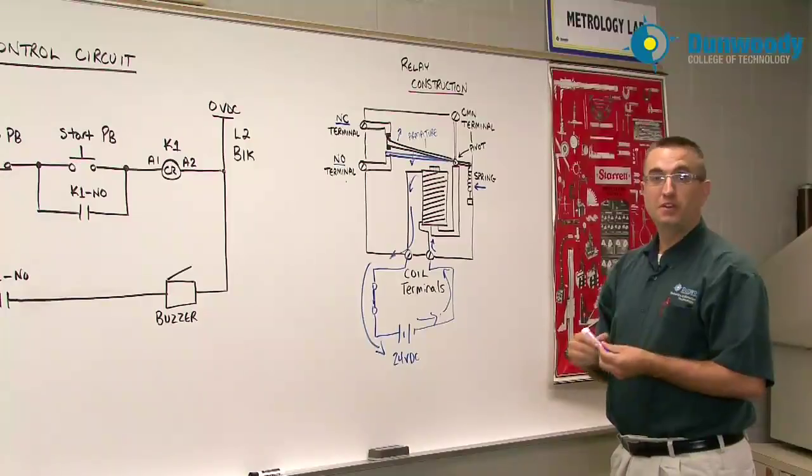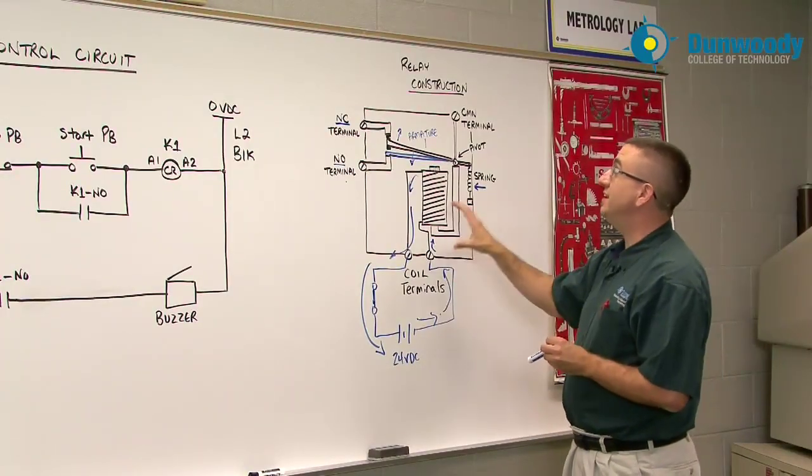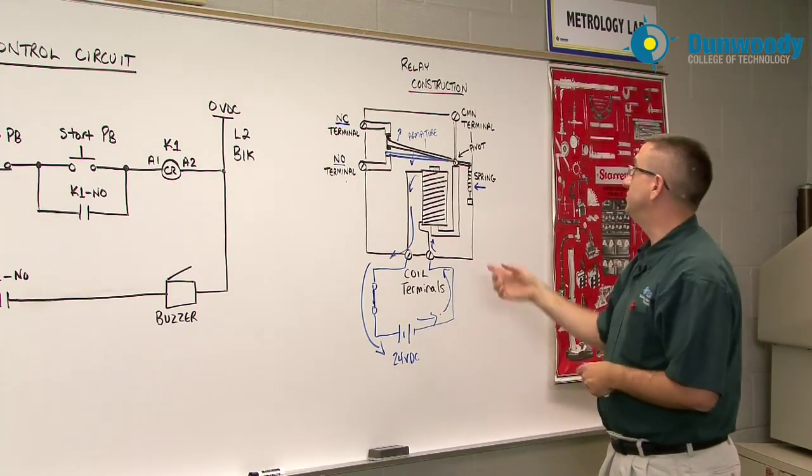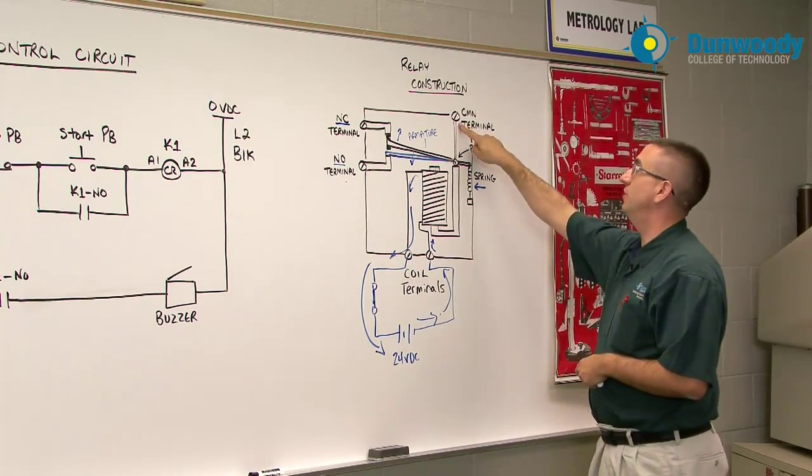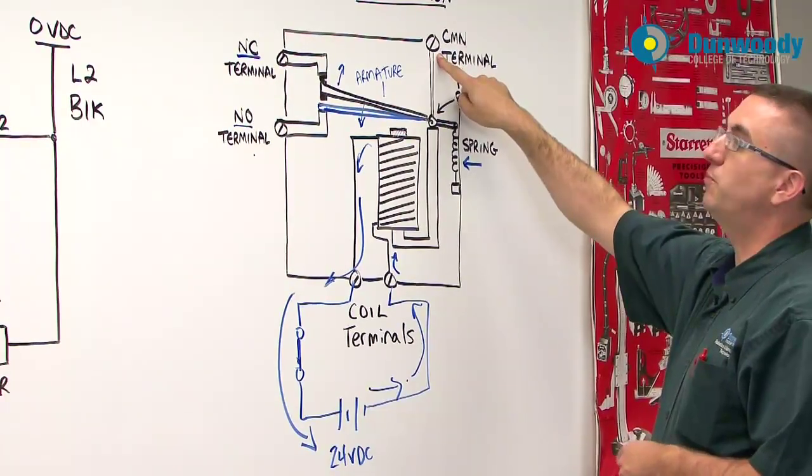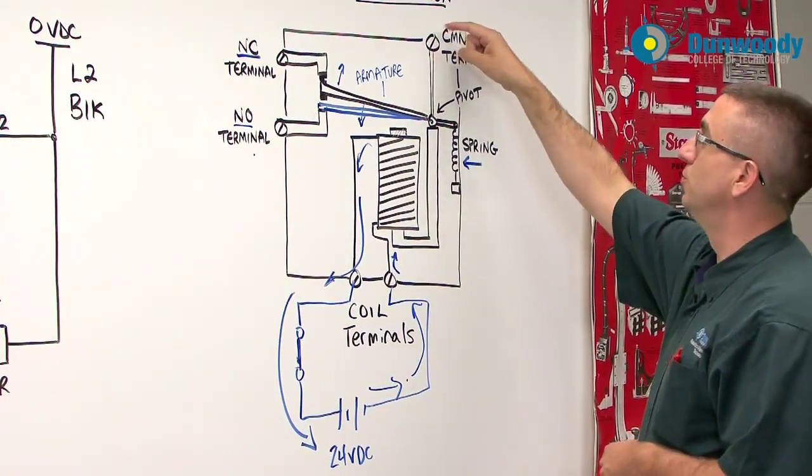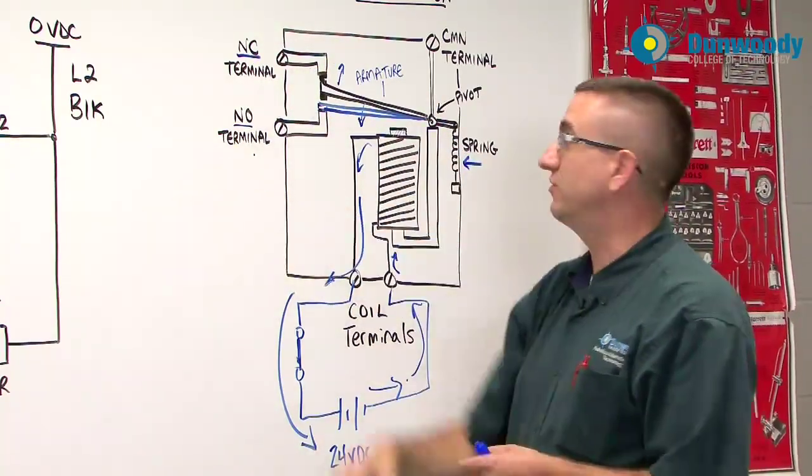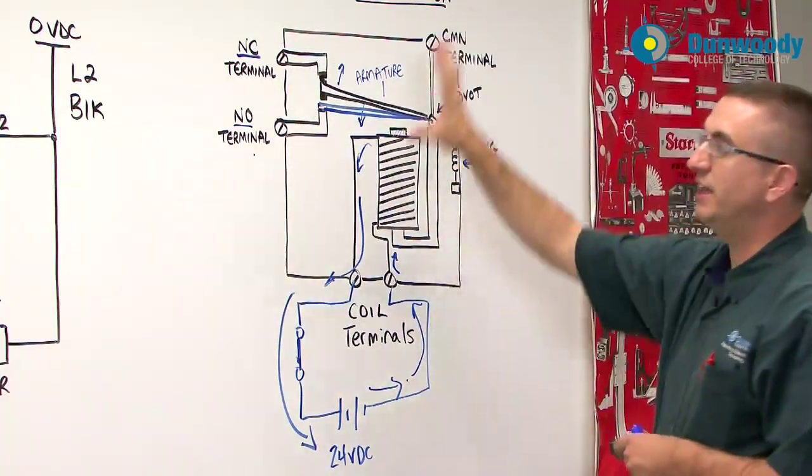So that's what normally open and normally closed contacts mean. Normally closed meaning closed when power is on and normally open meaning it's open when power is on. There's also a common terminal up here. The common terminal is a point where I can wire to to deliver power through a contact to a control device. So this is the basic relay construction.